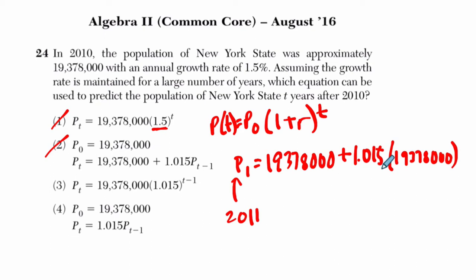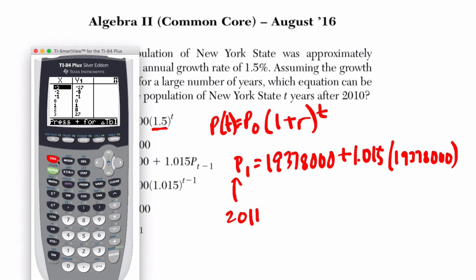So this is growing by quite a bit more. It's the original plus the original and 1.5% of that. And if we look at the calculator, we can see what's happening. Here, you do 19,378,000 plus 1.015 times 19,378,000.